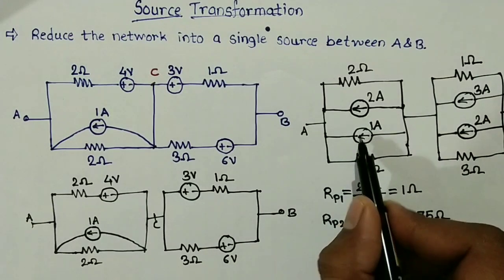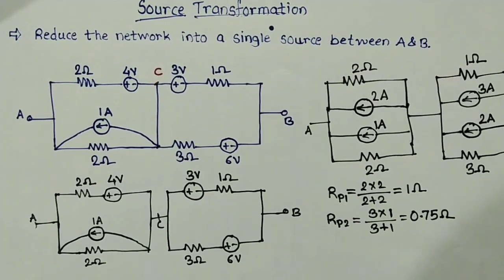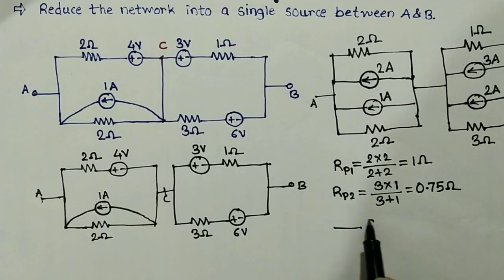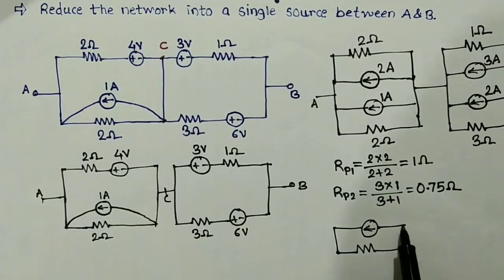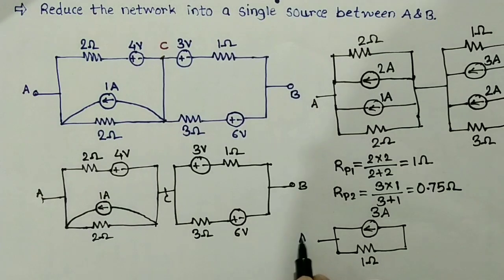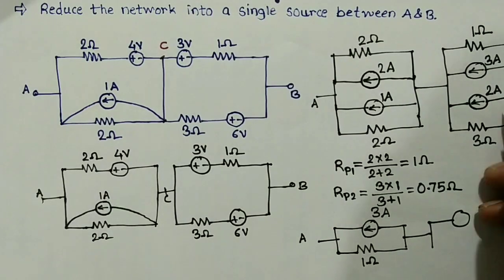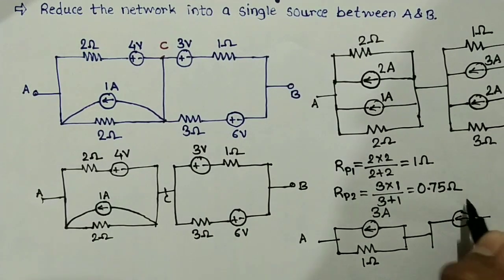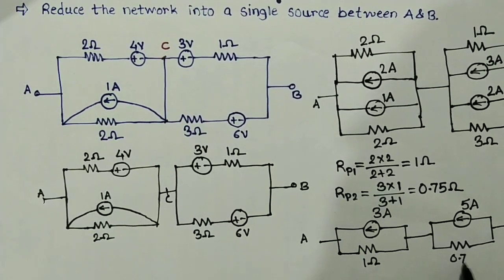Rp1 and these two current supplies are in parallel and in the same direction, so they will get added and the circuit will be replaced accordingly — it is a 3 ampere current source in parallel with Rp1, which equals 1 ohm. Now, this 3 and 2 ampere current supplies are in parallel and in the same direction, so again they will get added and we get a 5 ampere supply with an equivalent resistance of 0.75 ohm.